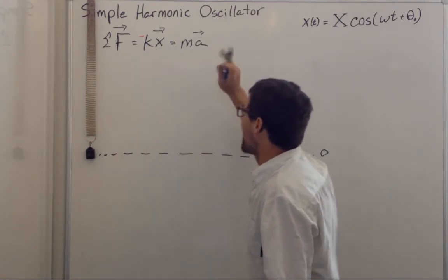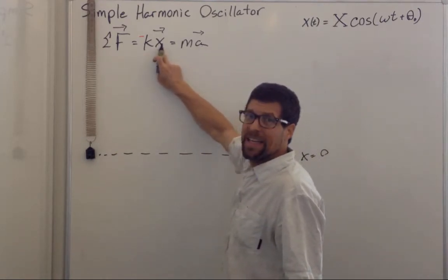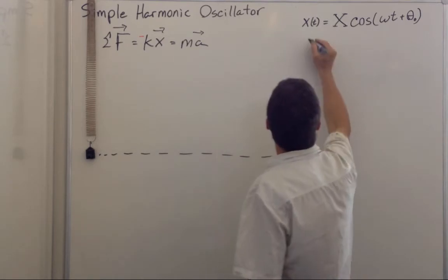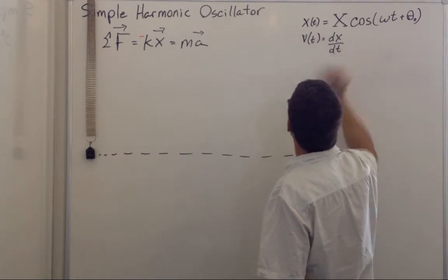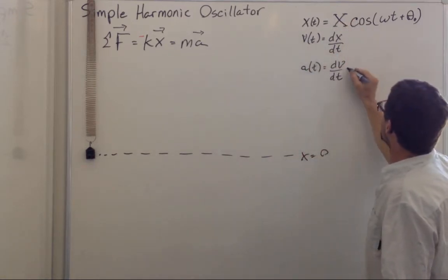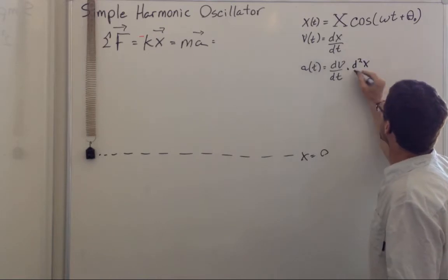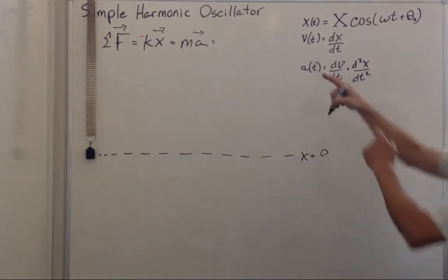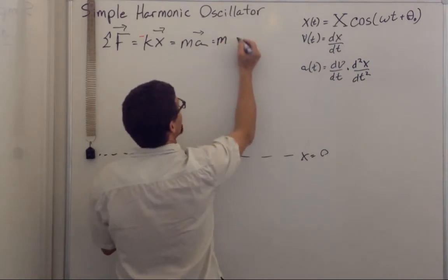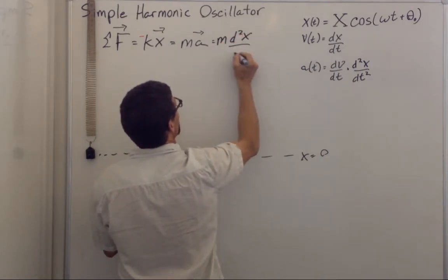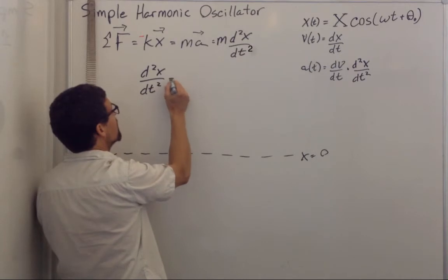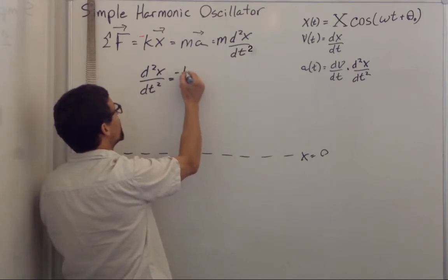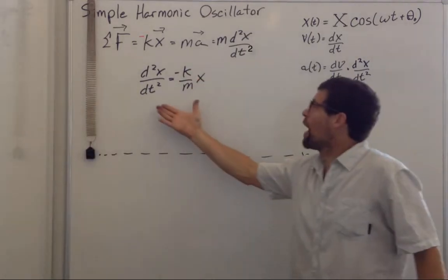But we have two unknowns. Except acceleration, I know, is the second time derivative of displacement. Velocity as a function of time equals dx dt. And acceleration as a function of time equals dv dt. But if you put this in, you get d squared x dt squared. So the second time derivative of x is now equal to negative k over m times x. So how do we solve this equation?